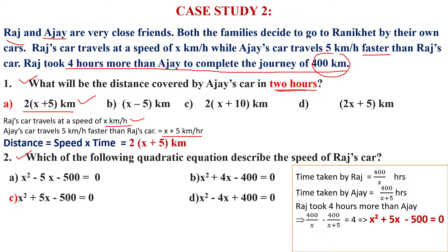Second question: which of the following quadratic equations describes the speed of Raj's car? Time is calculated as distance divided by speed. Time taken by Raj is 400/x hours, and time taken by Ajay is 400/(x + 5) hours. Since Raj took 4 hours more than Ajay, the equation is: 400/x − 400/(x + 5) = 4. When you take LCM and simplify, you get x² + 5x − 500 = 0. That is option C, the correct answer.